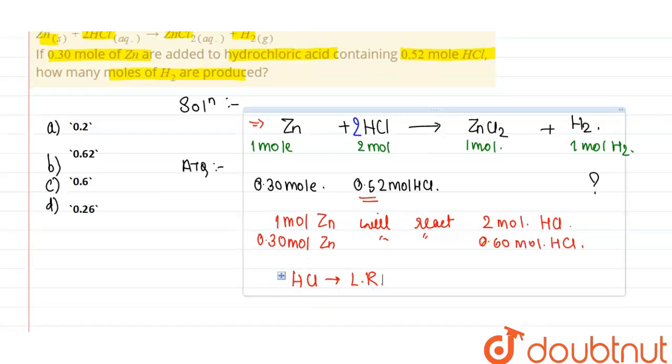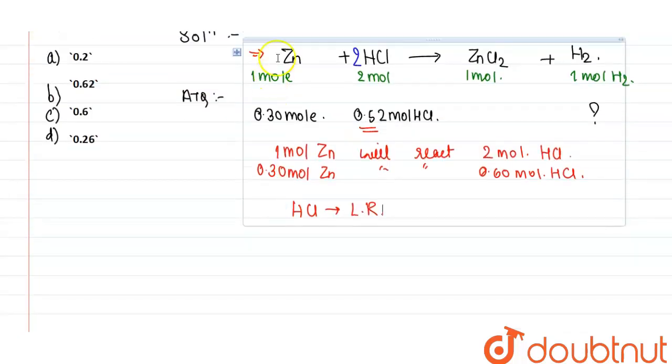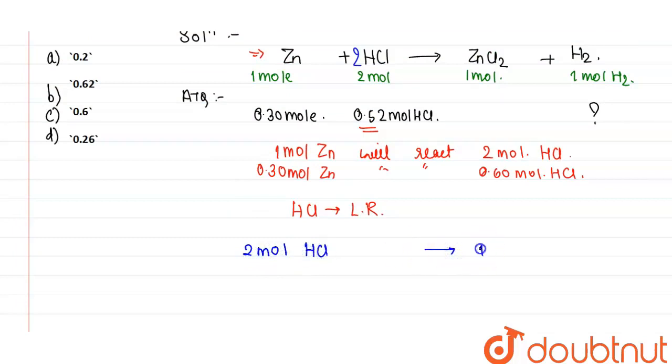Now we'll frame the equation according to HCl. 2 moles of HCl will give 1 mole of hydrogen gas. So 0.52 moles of HCl will give 1/2 times 0.52 moles of hydrogen gas. The answer will be 0.26 moles of hydrogen gas produced from 0.52 moles of HCl.